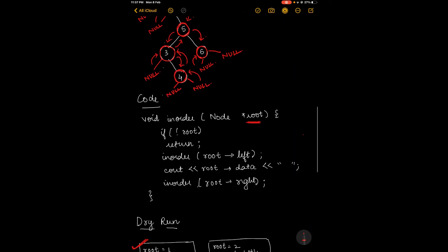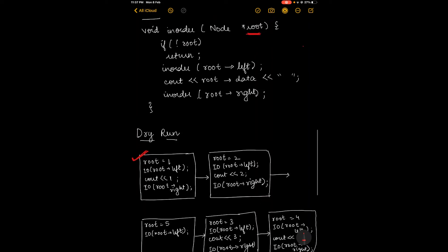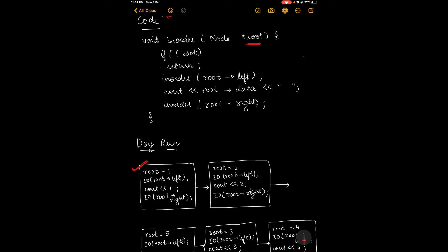Let's now dry run this code. Initially, root equals 1, as you can see in the diagram. Since root is not equal to null, the return statement is not triggered, and we move on to in-order with root's left child. Since there is no left child of 1, we simply return from this statement to the calling function and resume the code.